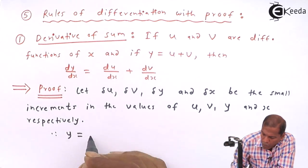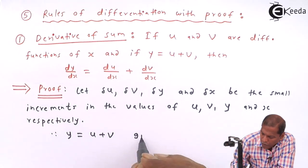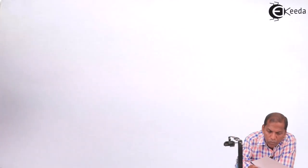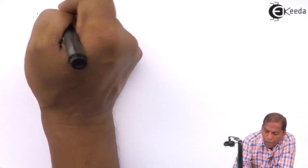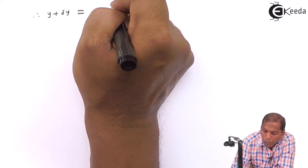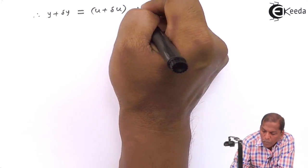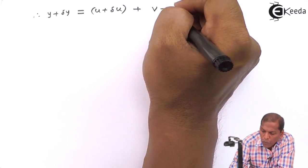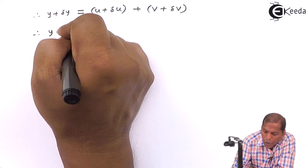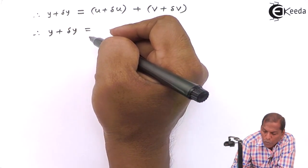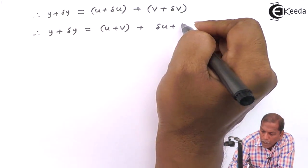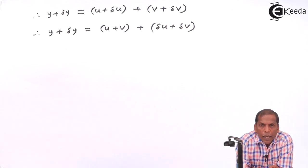Since given y = u + v, now here y changes to y + Δy, that equals u changes to u + Δu, and v changes to v + Δv. Therefore y + Δy = u + Δu + v + Δv.